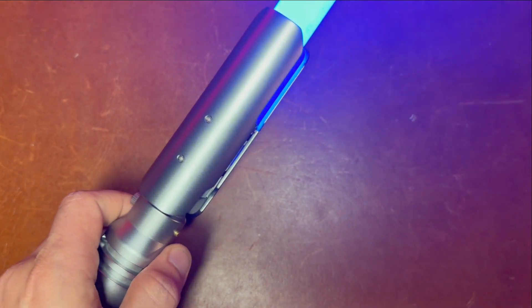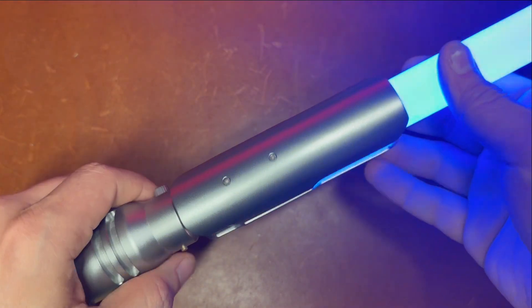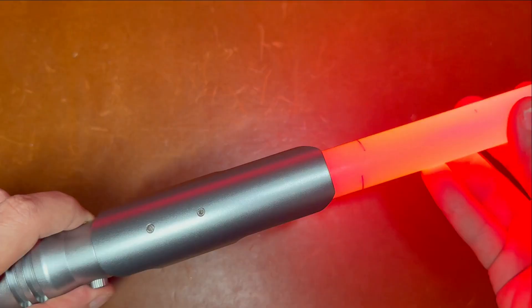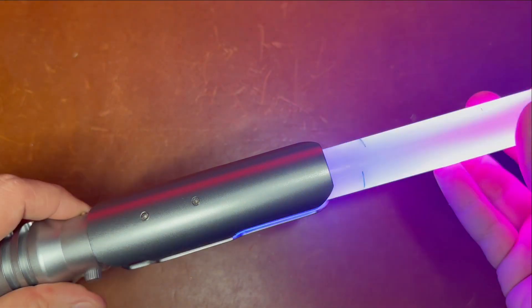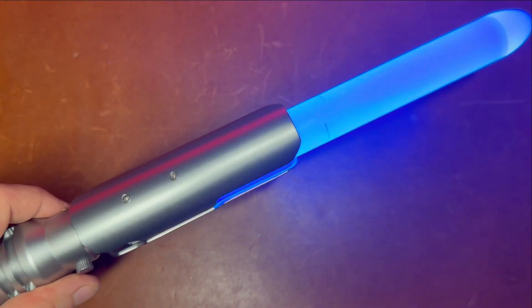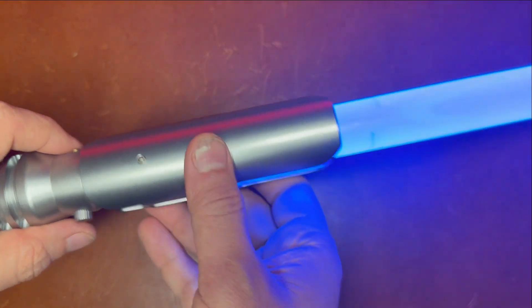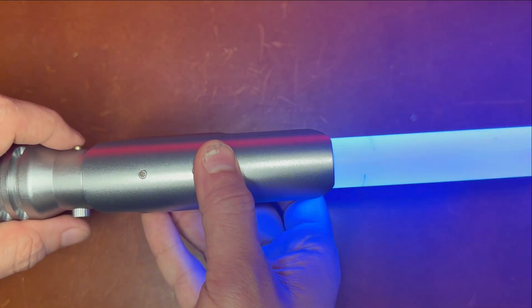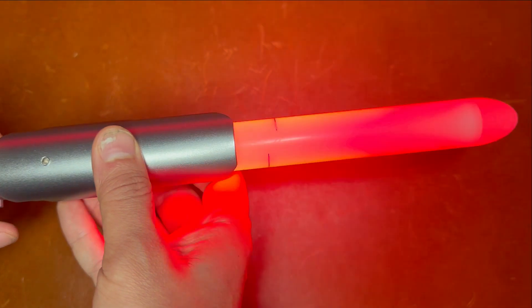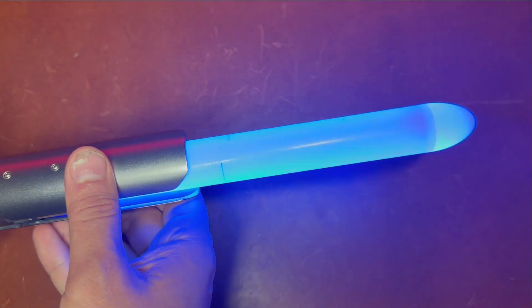If you want to change color, hold down aux and hit power. You do that every time you want to switch color. Just hold down auxiliary, hit power. It'll cycle through different colors.